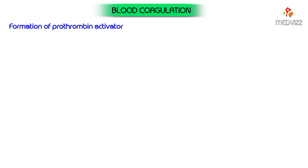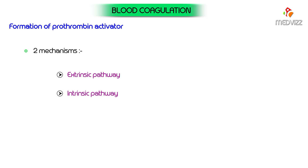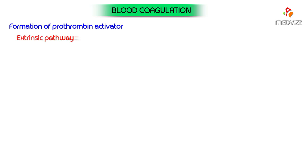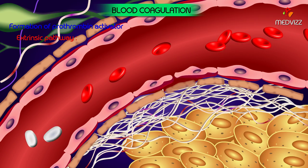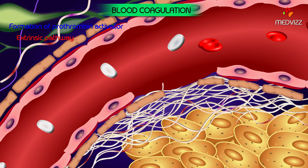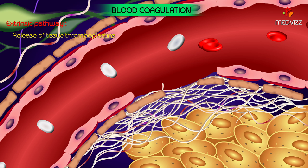Two different mechanisms are involved in the formation of prothrombin activator: the extrinsic pathway and the intrinsic pathway. The extrinsic pathway of formation of prothrombin activator begins with trauma to the vascular wall or tissues outside the blood vessel. It includes three basic steps, beginning with the release of tissue thromboplastins: the traumatized tissues release several substances which are together known as tissue thromboplastin.